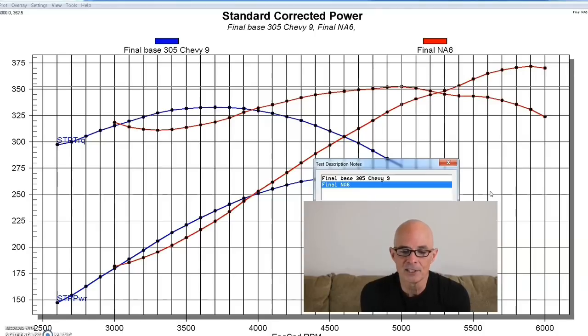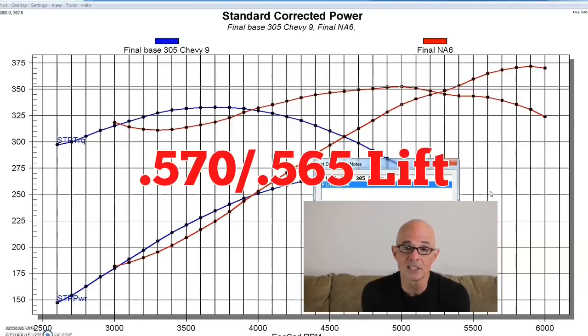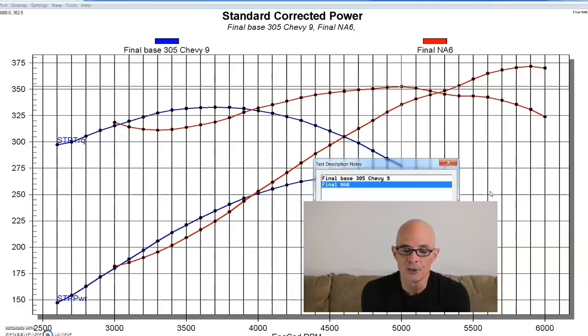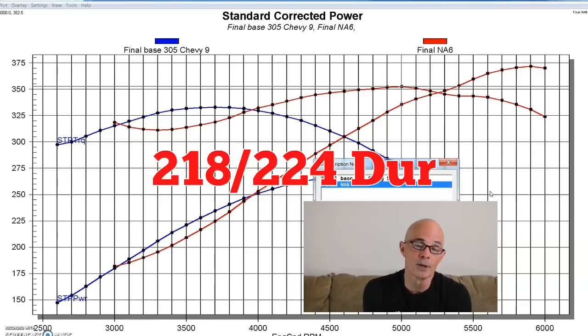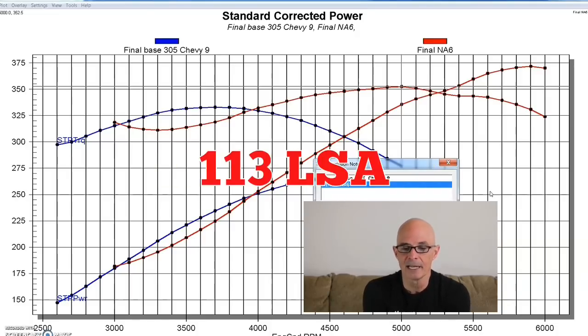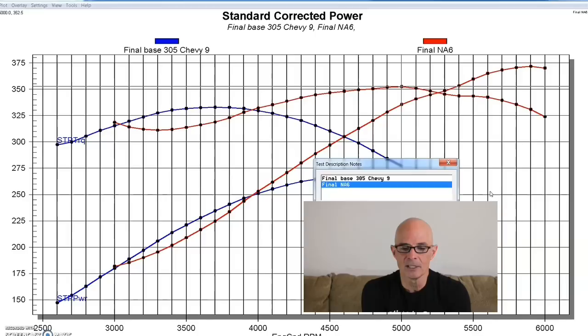That camshaft had 575-65 lift split, a 218-224 degree duration split, and a 113 LSA. So it was still something that you could drive around with - a 218-224 is not terribly big for a 5 liter combination. So definitely something that could be street driven all the time without any problem.